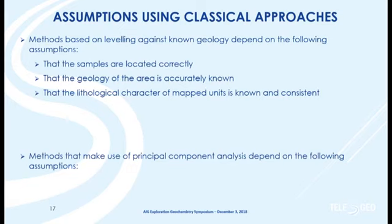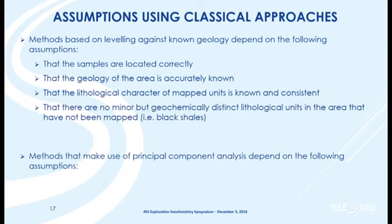You also need the lithological description and character of those map units to be well known and consistent, and that there are no minor units within the catchment that haven't been mapped but that are going to have a strong, overly influencing geochemical impact. Black shales — perhaps metalliferous black shales — would be an example. Another example from northern Vancouver Island was the Mount Hall Gabbro, which has a lot of copper associated with it but didn't come out as a mapped unit.